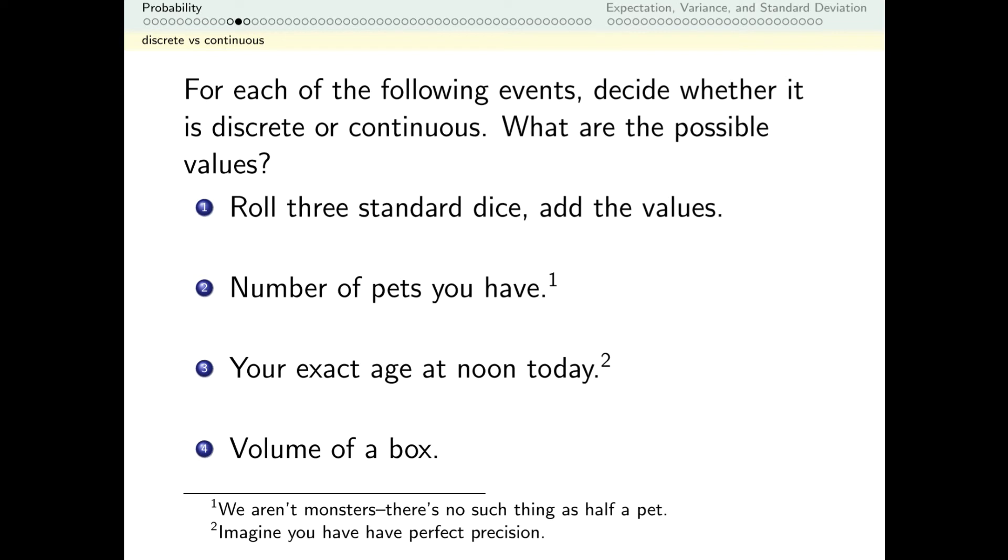Rolling dice, I can add them up and get 3, I can add them up and get 4, but I can't get anything in between. So that's discrete.